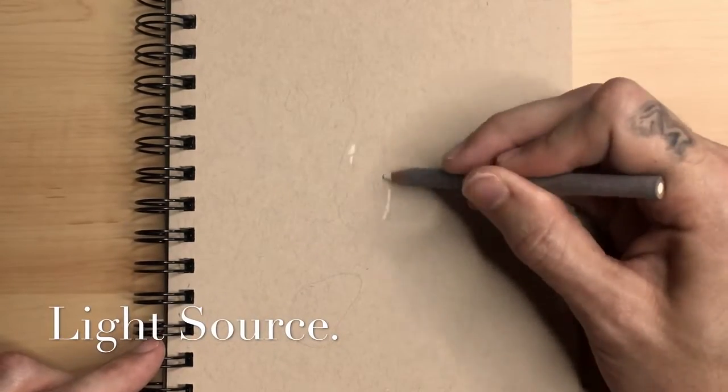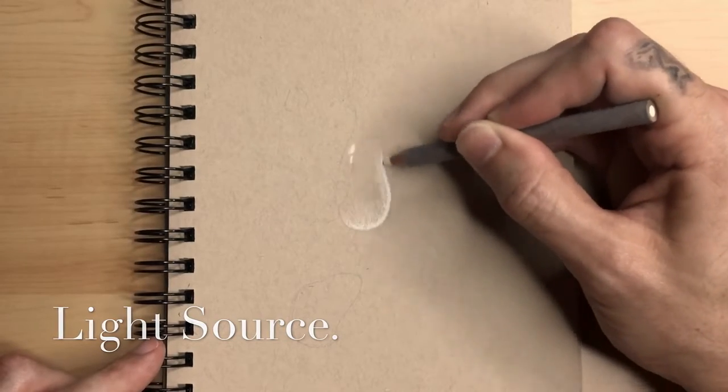The first thing you want to do is grab a graphite pencil and do a very light outline of each of the shapes that you want them to come out to.